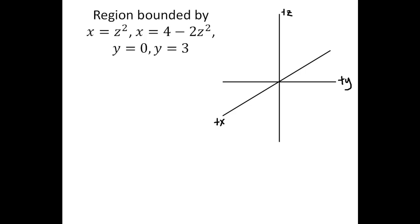A bounded region would be a region that does not extend forever. Something like a paraboloid that goes up forever, like one of those bowls that extends forever, or a plane that extends off forever in all directions — those would be examples of unbounded regions. This region is going to be bounded so that we have basically an enclosed region where all of these surfaces form sides of some closed region. Something like a box or a ball would be things that are enclosed.